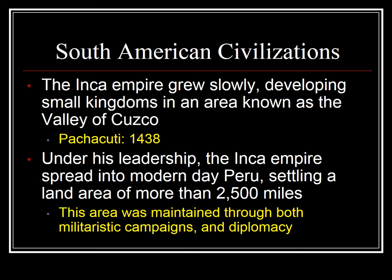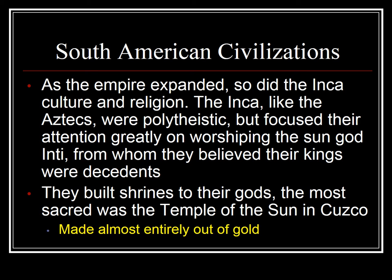The Inca empire did not become massively significant until leader Pachacuti came into power in 1438. Under his leadership, the Inca empire spread into modern-day Peru, settling in a land area of more than 2,500 miles — an absolute beast amount of land, attesting to how advanced the Inca were. This area was maintained through both militaristic campaigns and diplomacy. As the empire expanded, so did the Inca culture and religion. Like the Aztecs, the Inca were polytheistic but focused greatly on worshipping the sun god, Inti, from whom they believed their kings were descendants.